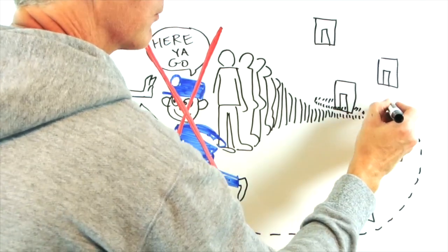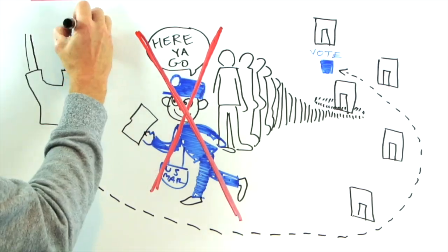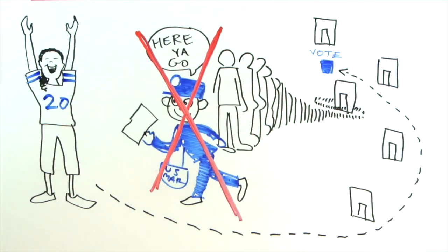So our voter dodges the block, makes an end around the long lines, and drops off her ballot at a validated drop box before election day. Her vote is up. It's good.